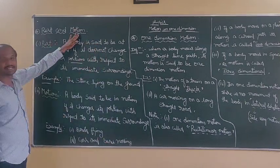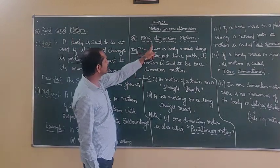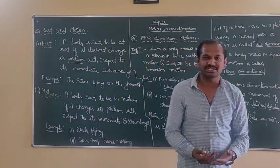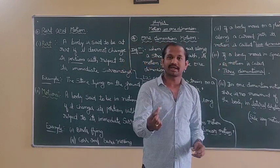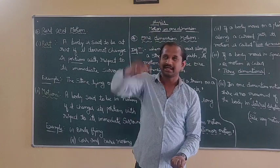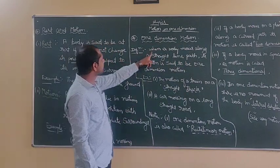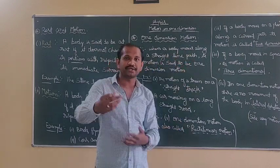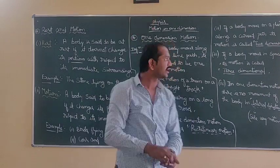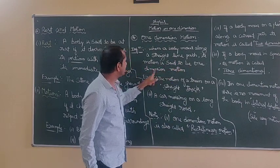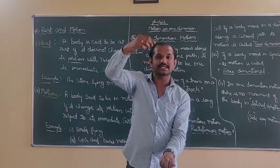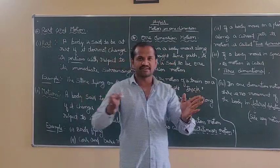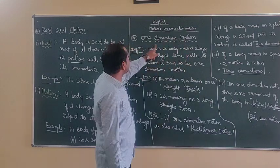Now let us go to the next topic: what do we mean by one-dimensional motion? That is the name of our chapter itself — motion in one dimension. Consider I have a chalk in my hand and I flip it downward — it moves in a straight line. Definition: when a body moves along a straight line path, its motion is said to be one-dimensional motion. So anything in the universe which is moving along a straight line path is considered to be one-dimensional motion.